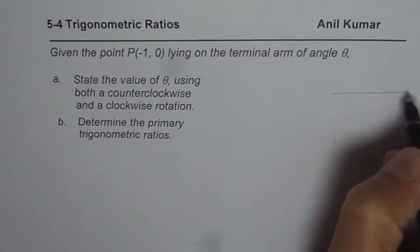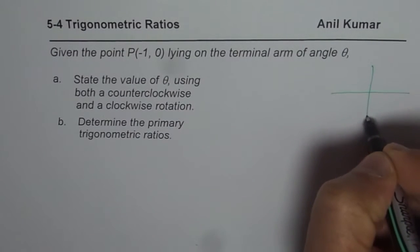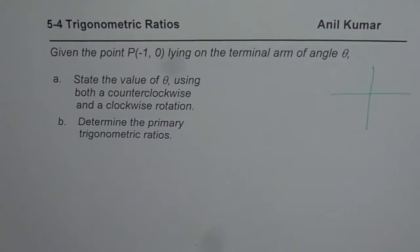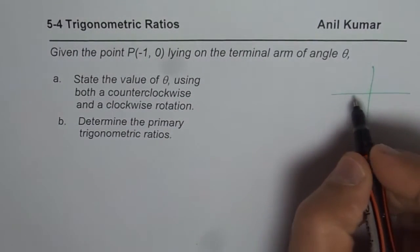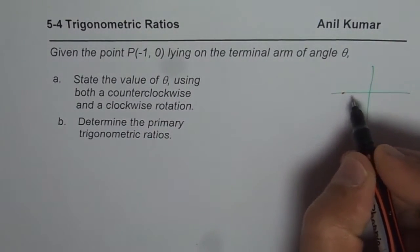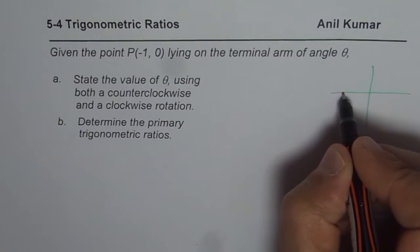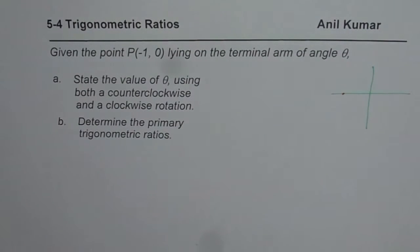Let us explore how we can find the trigonometric ratios and the angle for the given point. Point P is (-1, 0). That is to say, the x value is -1 and y value is 0. So that becomes point P for us.